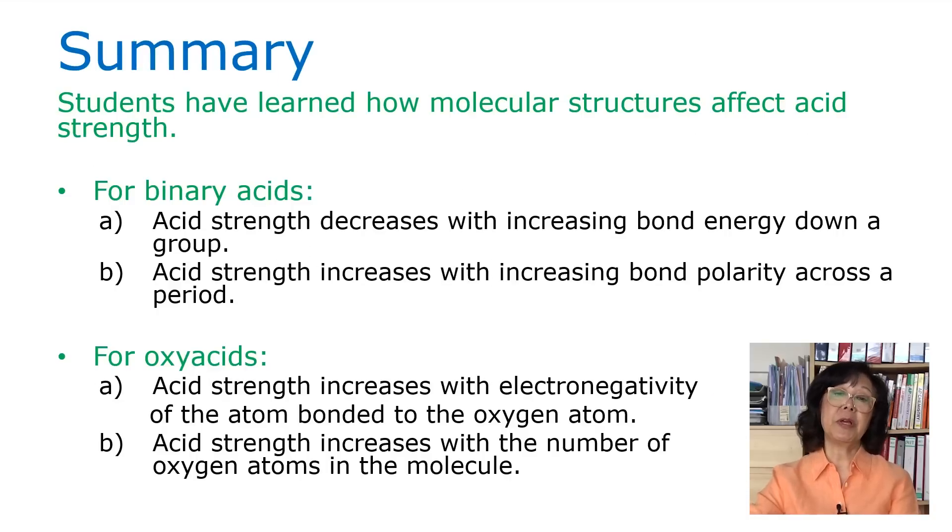To sum up what we have learned today, we've learned how molecular structures would affect acid strength. For binary acids, the acid strength decreases with increasing bond energy down a group. Acid strength increases with increasing bond polarity across a period. When we look at oxyacids, acid strength increases with electronegativity of the atom bonded to the oxygen atom. And finally, acid strength increases with the number of oxygen atoms in the molecule.